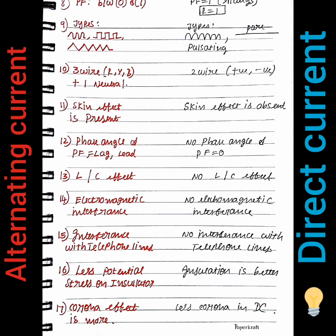In AC, there is a skin effect, a phase angle of up to 90 degrees, and power factor lag/lead problems. In DC, there is zero phase angle and no inductance or capacitance effect.